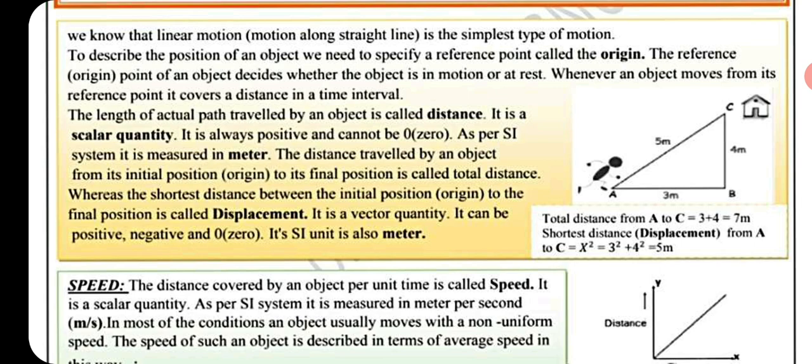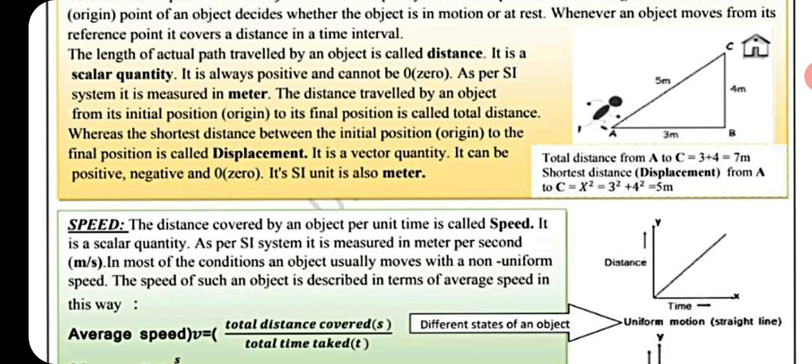The shortest distance between the initial position and the final position is called displacement. It is a vector quantity; it can be positive, negative, or zero. Its SI unit is meter. For example, total distance from A to C is 3 plus 4, equal to 7 meters, whereas the shortest distance — displacement from A to C — is calculated separately.